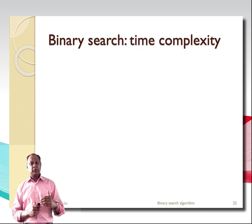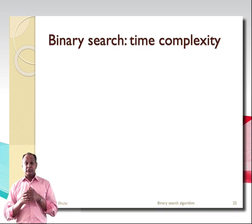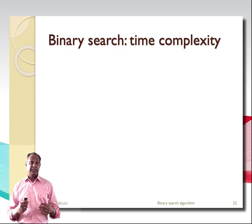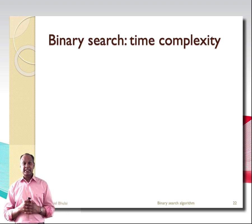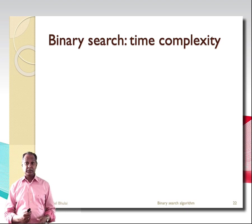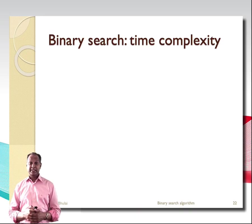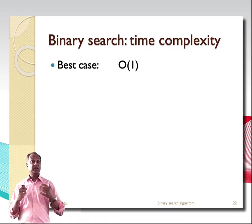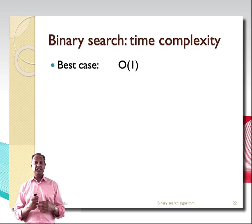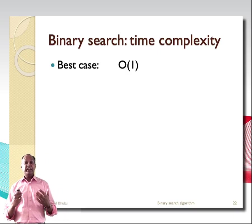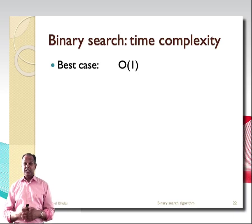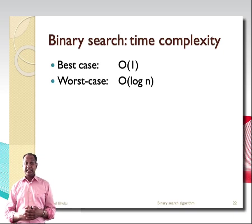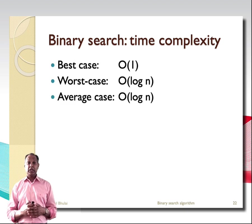Looking at the time complexity of binary search: in the best case, the algorithm needs only one comparison — when the search key K is the middle element — giving O(1). Binary search uses the divide and conquer technique, repeatedly dividing the list into two parts. This means the worst-case time complexity is O(log N) and the average-case time complexity is also O(log N).